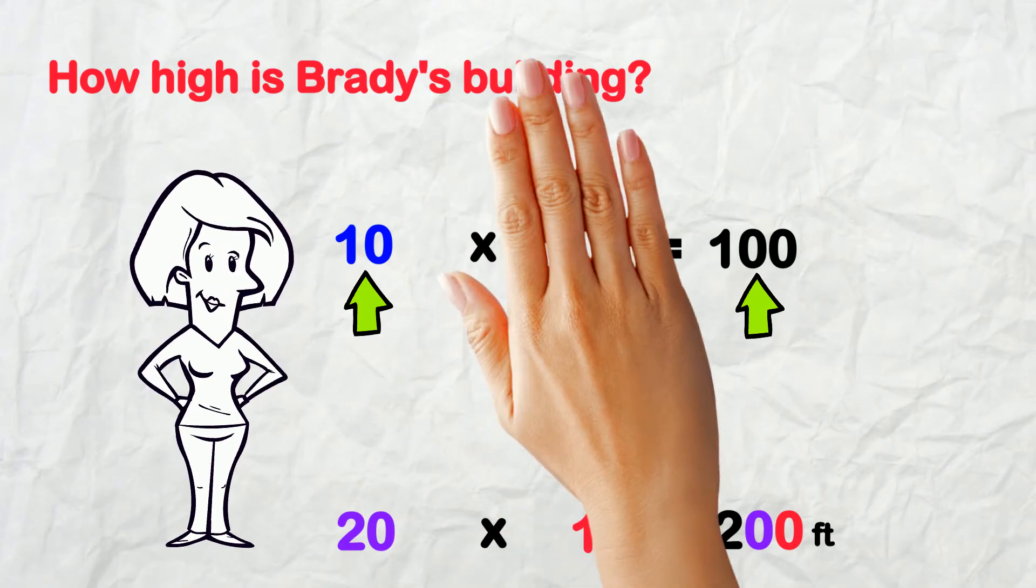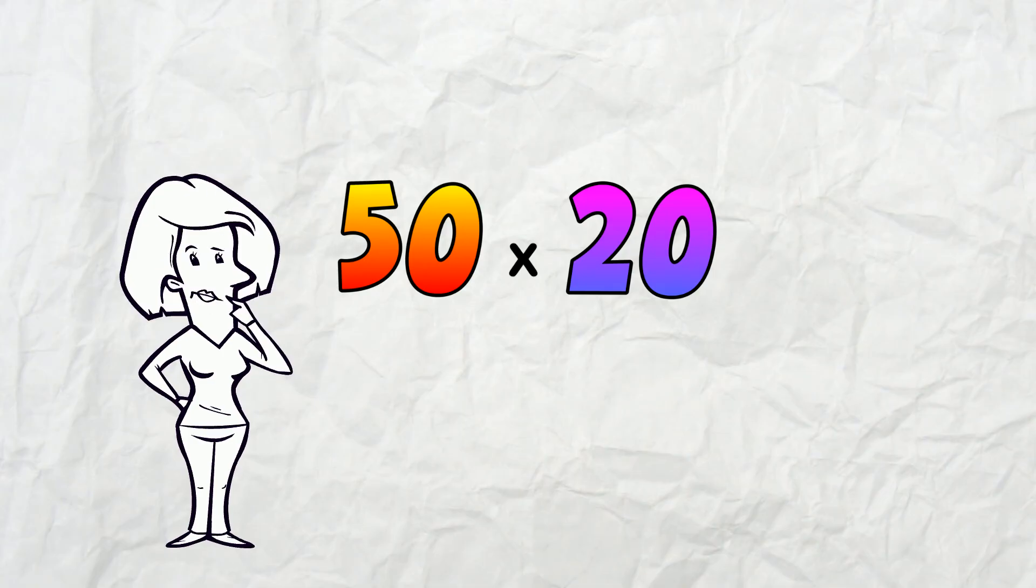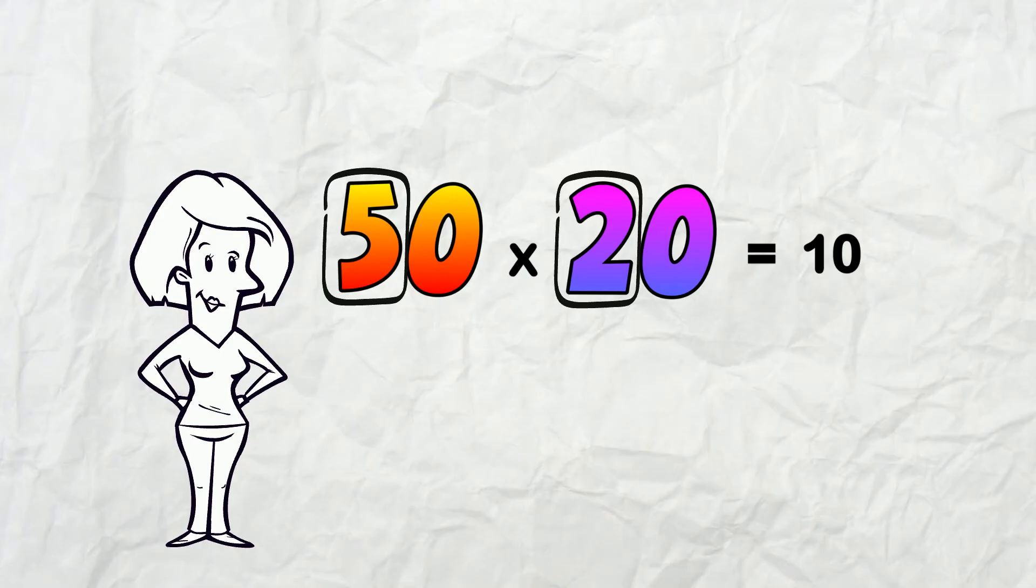OK, what if you had 50 times 20? Well, you'd say 5 times 2 is 10, and then you'd transfer the zeros.